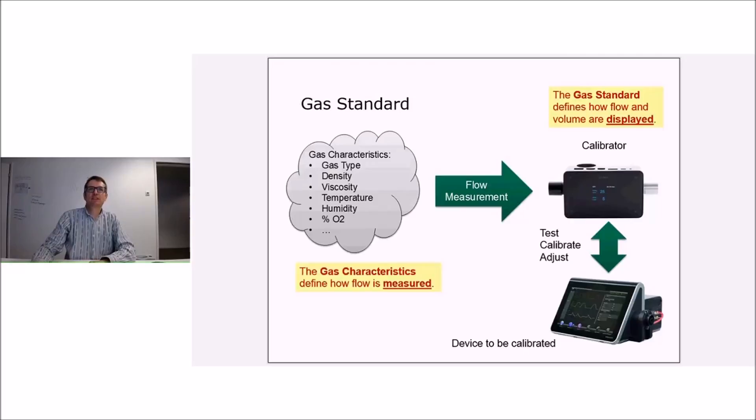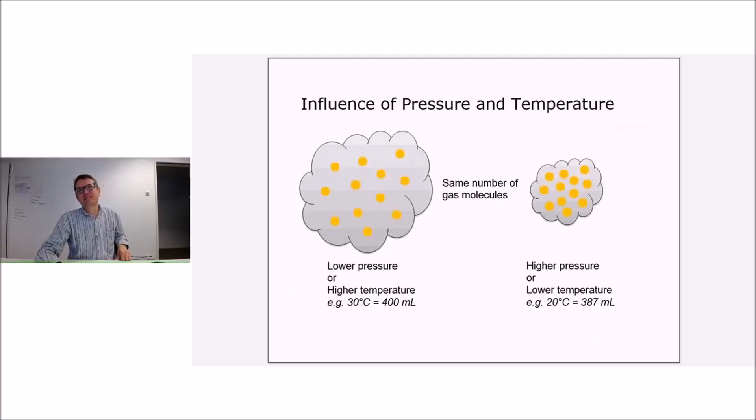Gas characteristics define how the flow is measured, and the gas standard defines how the flow is displayed. Well, now comes the different influences of pressure. You all know that a gas at a higher temperature or a lower pressure takes up more space, and all this is taken into account by the PF300. So a gas cloud with a number of molecules might be much bigger at 30 degrees Celsius than it is at 20 degrees. What we can see here as an example.